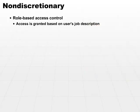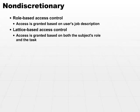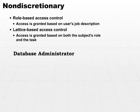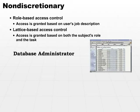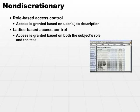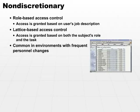Another type of non-discretionary access control is referred to as lattice-based access control. In some cases, just specifying the role that a user fulfills is not good enough. You may want to create a lattice, or a table, in which you grant access based on both the subject's roles and the particular task. For example, a database administrator may need access to perform certain tasks but not all tasks, so you may need to create a table of all the different tasks that a DBA may need to perform. Both of these non-discretionary access control techniques are fairly common in environments with frequent personnel changes.